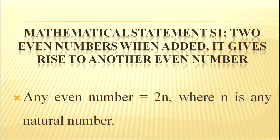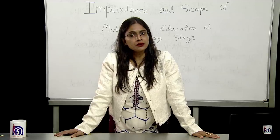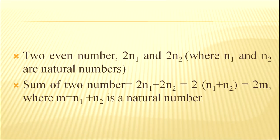Mathematical statement S1: Two even numbers when added give rise to another even number. Any even number equals 2n where n is any natural number. Two even numbers are 2n1 and 2n2 where n1 and n2 are two natural numbers. Sum of two numbers equals 2n1 + 2n2 = 2(n1 + n2) = 2m where m equals n1 + n2.